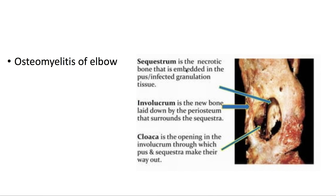This is a case of osteomyelitis of the elbow. As seen on imaging: the sequestrum, which is the necrotic bone embedded in pus-infected granulation tissue; the involucrum, which is the new bone laid down by the periosteum that surrounds the sequestra; and the cloaca, which is the opening in the involucrum through which pus and sequestra make their way out.